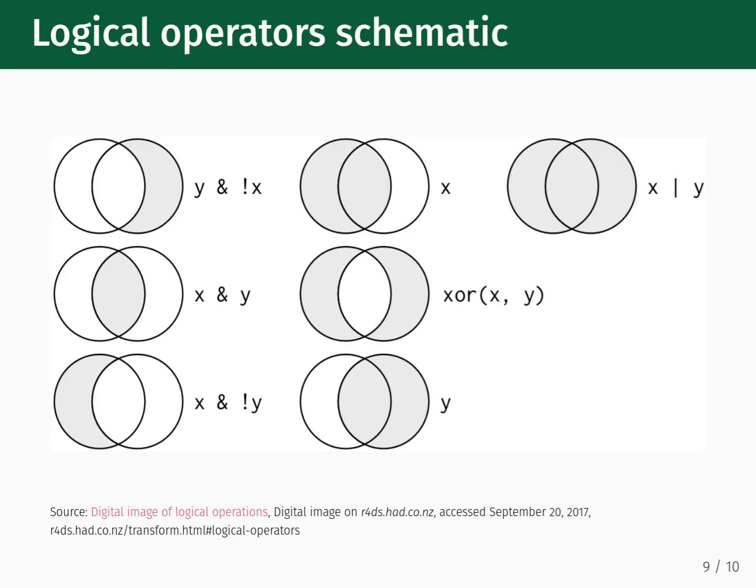This schematic of Venn diagrams visually represents how the logical operators work. The left circle is represented by the variable X, and the right circle is represented by the variable Y. The sections of the circles are shaded with gray to represent what a given rule will match. Starting in the first column, we see the first example which says Y and NOT X. This statement returns the non-overlapping portion of the right circle. Below that is the statement X and Y. This returns the overlapping region only. Below that is X and NOT Y, which returns the non-overlapping portion of the left circle. In the second column is X, which returns the full left circle. Below that is X EXCLUSIVE OR Y, which returns the non-overlapping regions of the left and right circles. Below that is Y, which returns the full right circle. And the third column is X OR Y, which returns all of the regions of the Venn diagram.